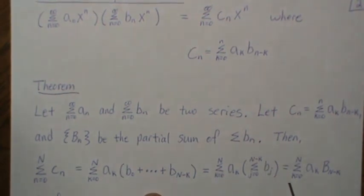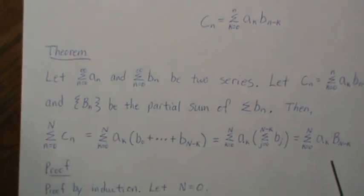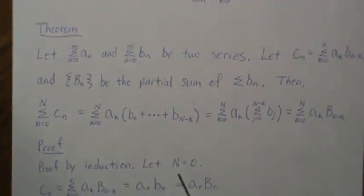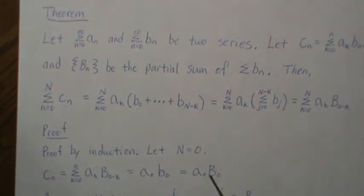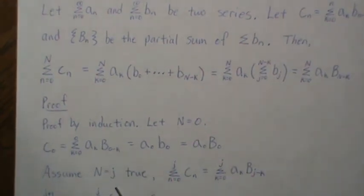We prove it by induction. Let n equal zero. c₀ is this, which is a₀b₀, which is a₀ times the partial sum of zero of the b's. That's kind of trivially true.